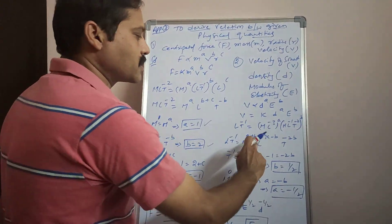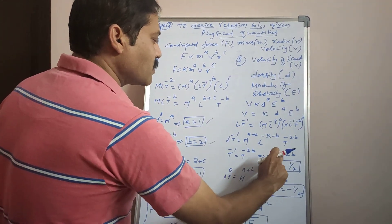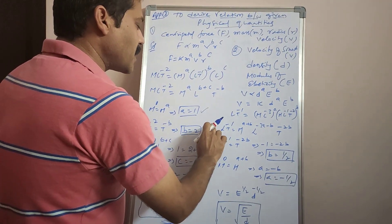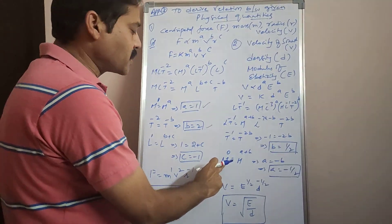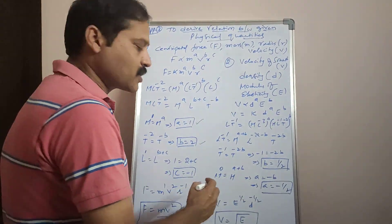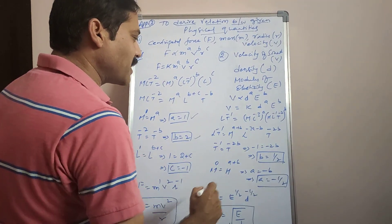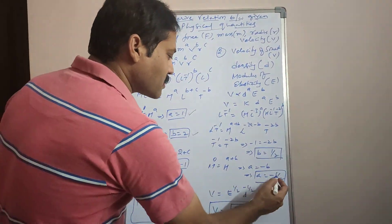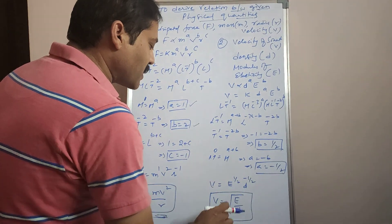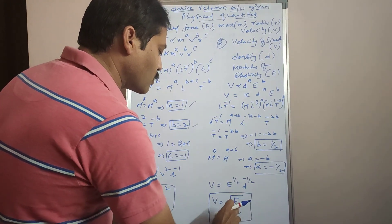Equating the dimensions: T power −1 = T power −2B, so −1 = −2B, giving B = 1/2. For M: M power 0 = M power (A + B), so A + B = 0, meaning A = −B = −1/2. Therefore V = E power (1/2) × D power (−1/2), which can be written as V = √(E/D).